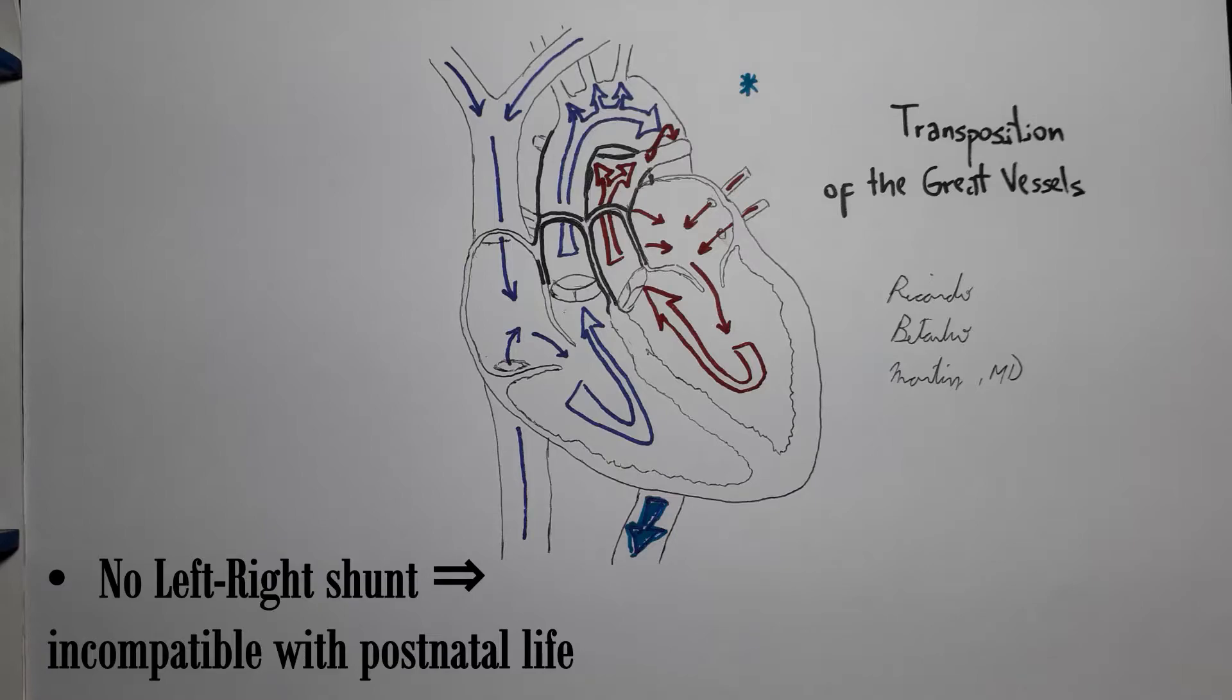What actually happens is that D-transposition of the great arteries is often associated with other defects such as atrial septal defects, ventricular septal defects, or persistent ductus arteriosus, which connect the right and the left heart.